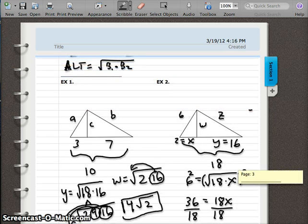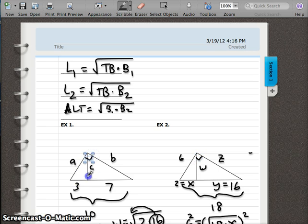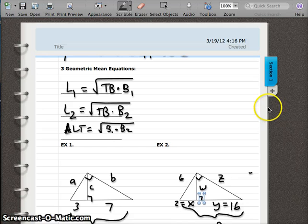So that's how we can use geometric means to solve for missing parts of right triangles. We've got our little right angles here. There we go. So try and remember those three formulas and it will help you find missing parts of a right triangle.